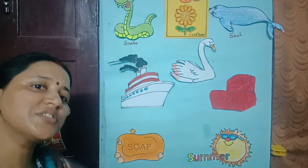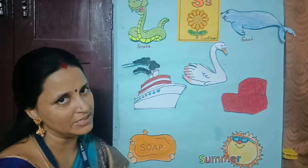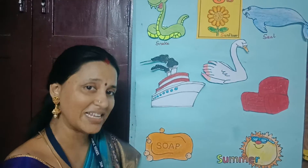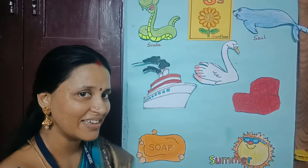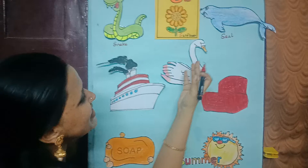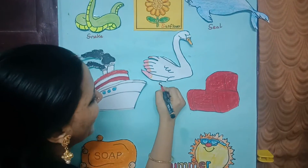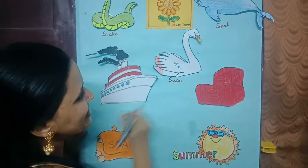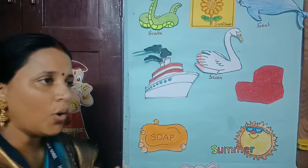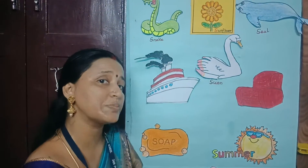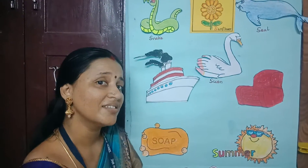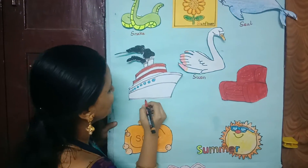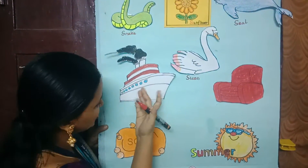Now you have to tell me — ma'am has taught you birds. What is the bird that starts with the letter S? You are right, that is swan. S as in swan. What is the water transport that you can sail in the water? You are right, that is ship. S as in ship.